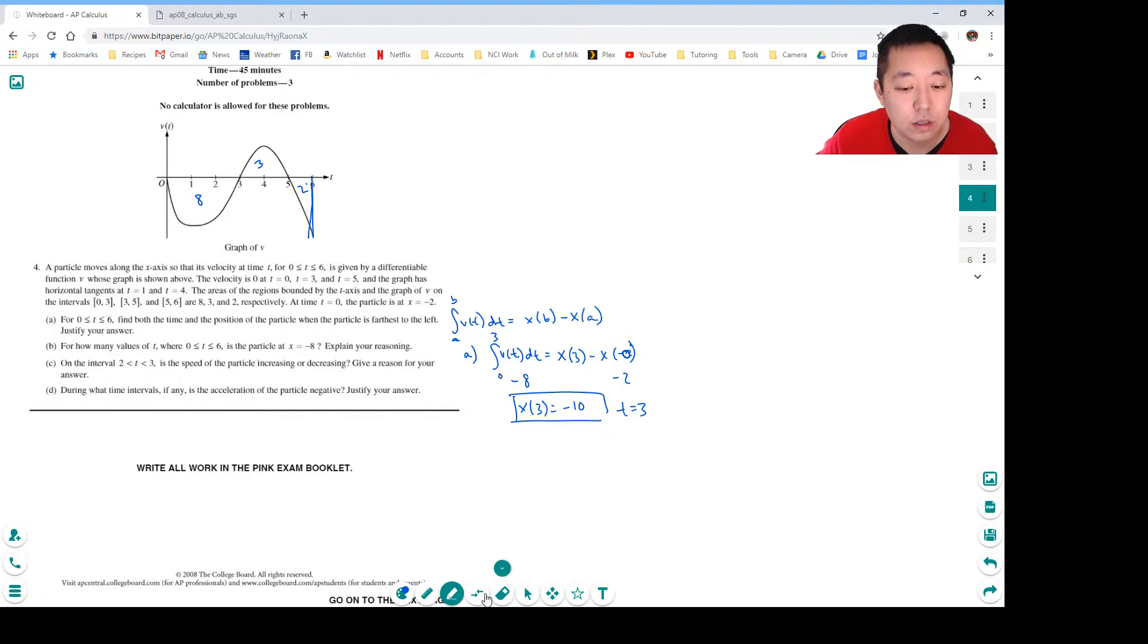Okay, for how many values of t where 0 is less than t less than or equal to 6 is the particle at x equals negative 8? Well we know x(0) is equal to negative 2, x(3) is equal to negative 10, so by the intermediate value theorem there's a time between here and here that x(t) equals negative 8, because it's going from negative 2 to negative 10 so there must be a point there.